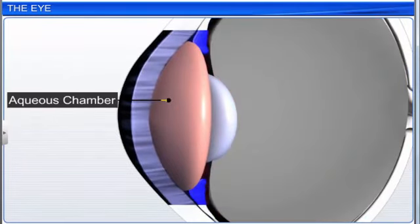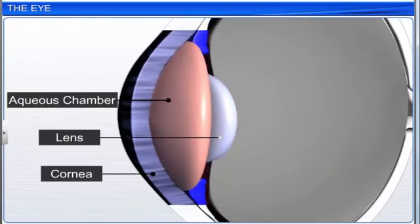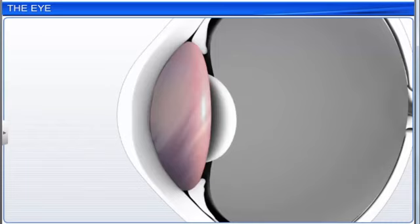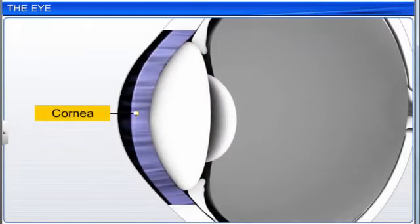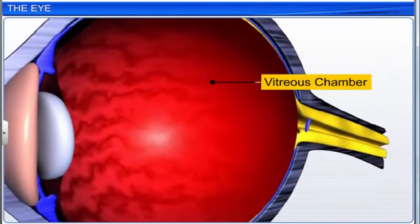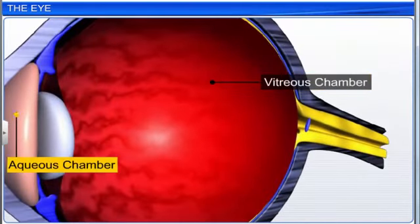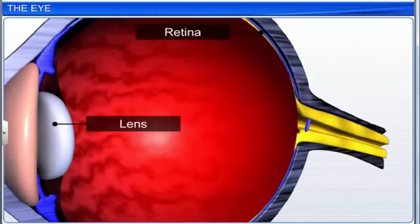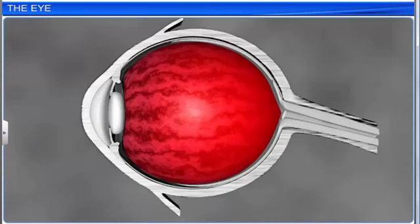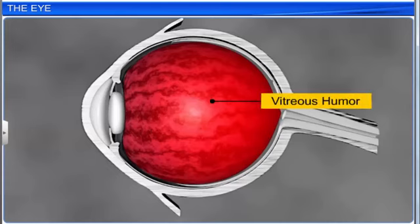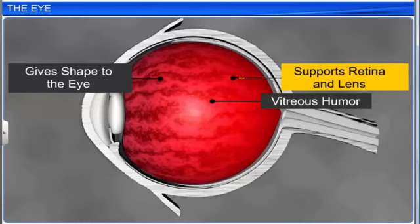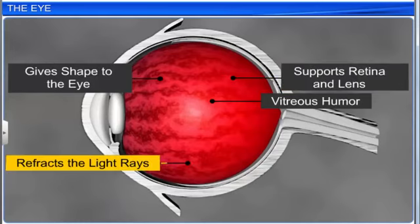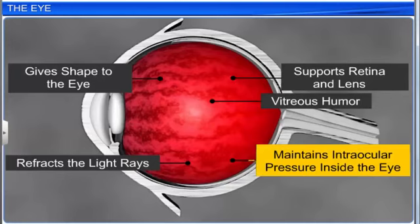The aqueous chamber lies between the cornea and lens. It is filled with a thin, watery fluid — an aqueous humor — that provides nutrition to the lens and cornea. The vitreous chamber is larger than the aqueous chamber and lies between the lens and retina. It is filled with a transparent gel called vitreous humor, that gives shape to the eye, supports the retina and lens, refracts light rays, and maintains intraocular pressure inside the eye.